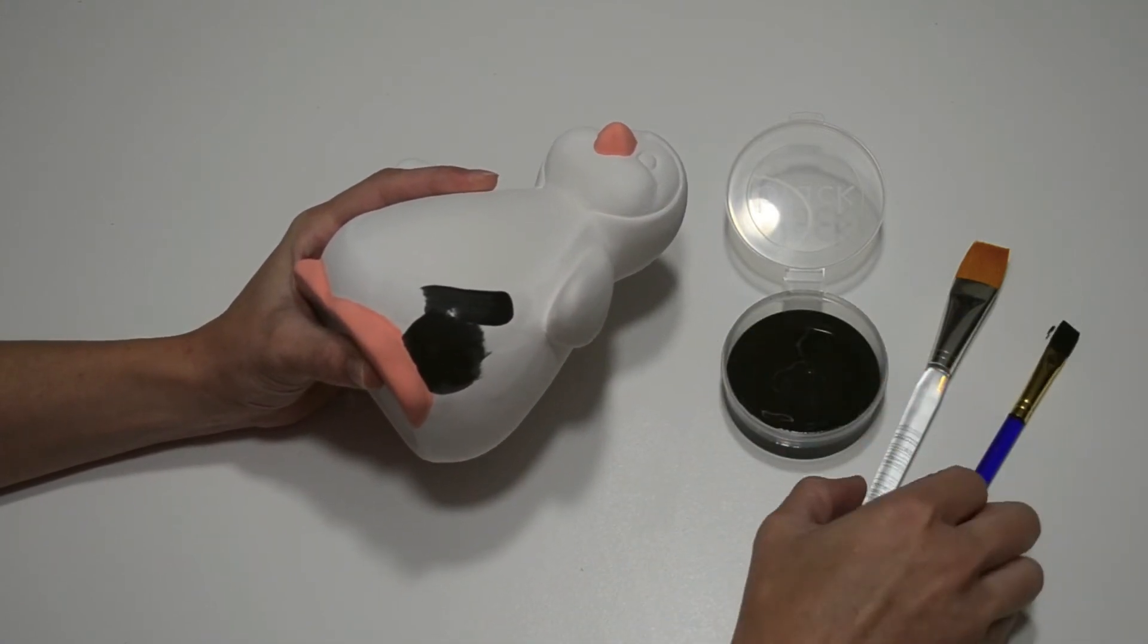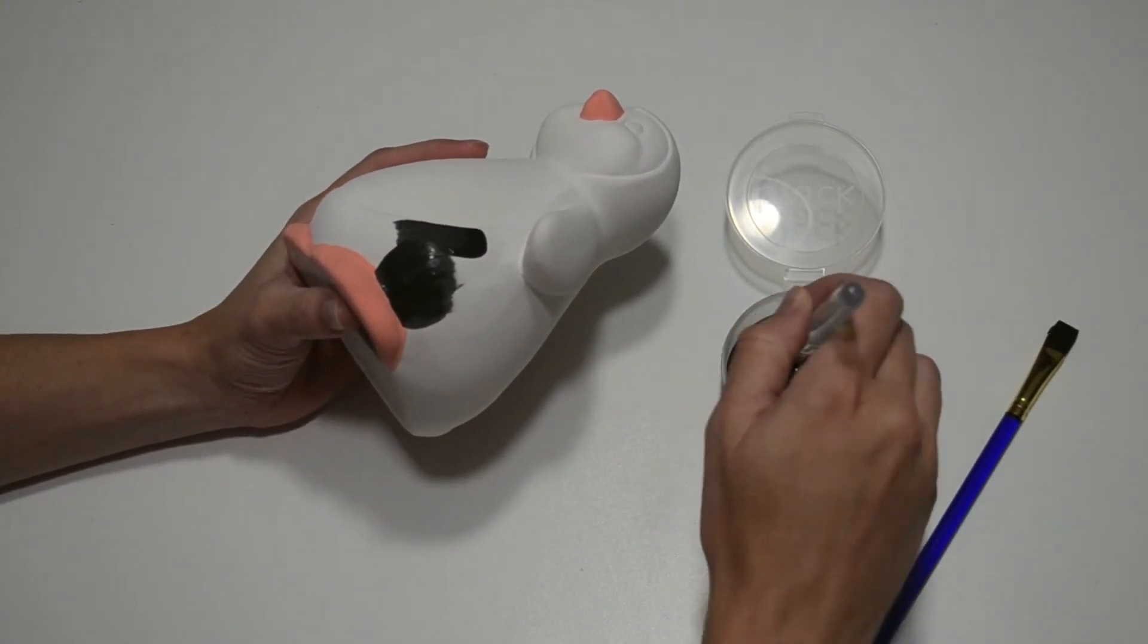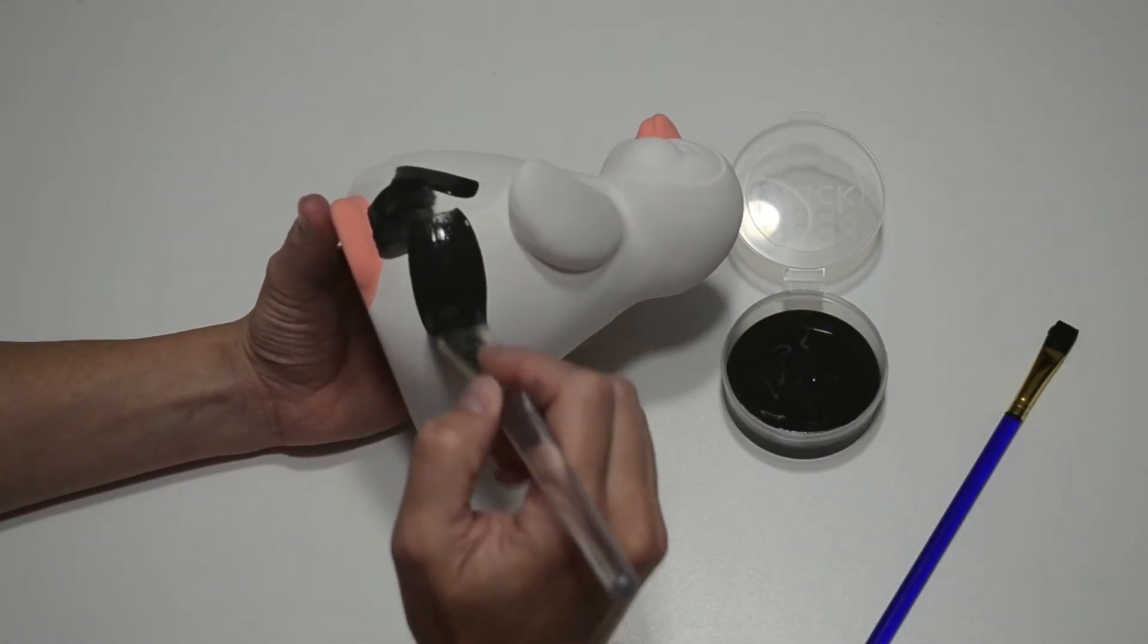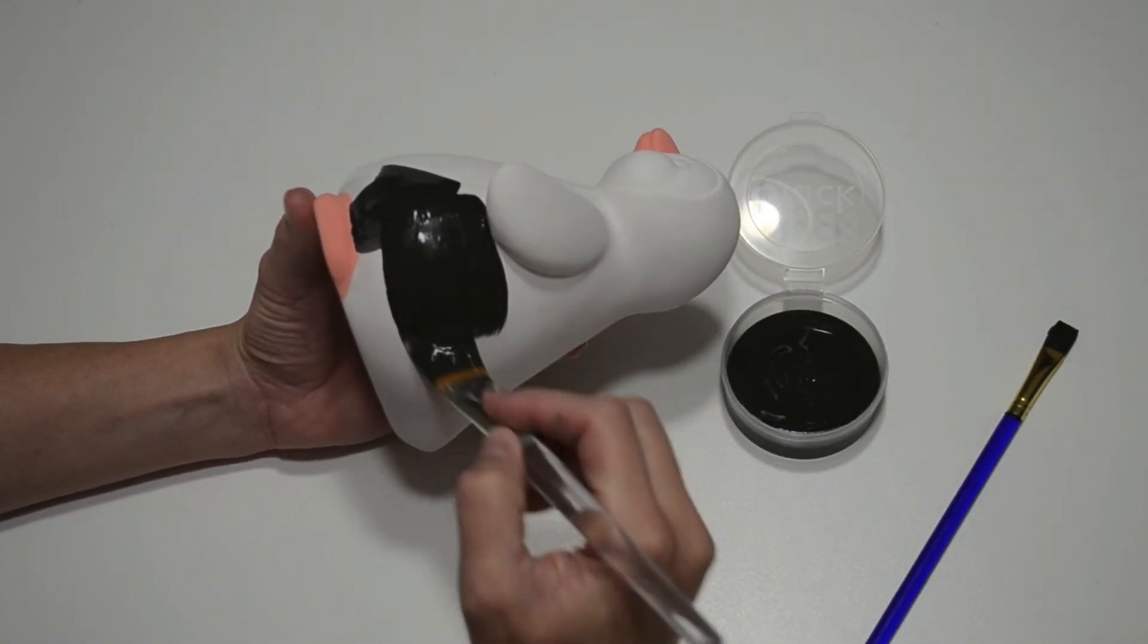Next, I'll use a larger brush to cover the rest of the body since it's faster. Again, three coats of paint will give you a nice solid finish.